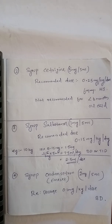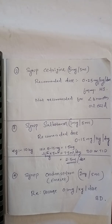Next drug is syrup ondansetron. The available strength is 2 mg per 5 ml. The recommended dosage is 0.1 mg per kg per dose. We can give it twice daily.